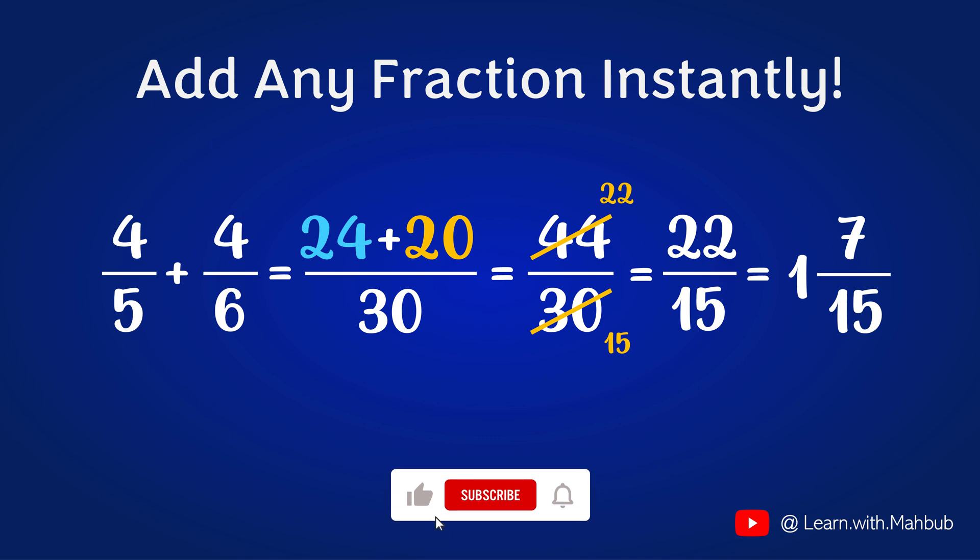Let's simplify it further. 22 divided by 15 is 1 and leftover 7 is in the numerator and 15 will stay in the denominator.